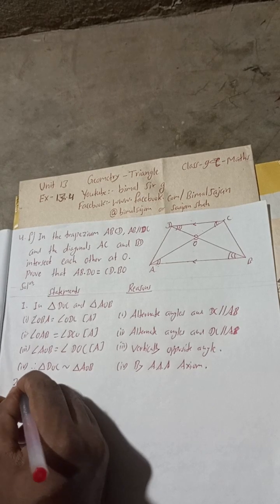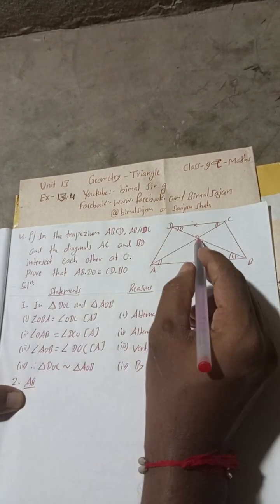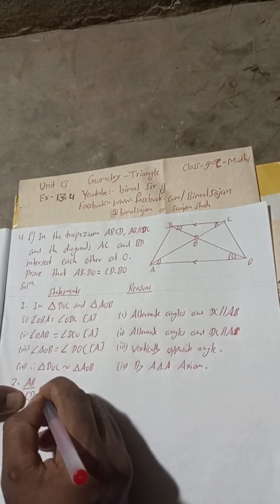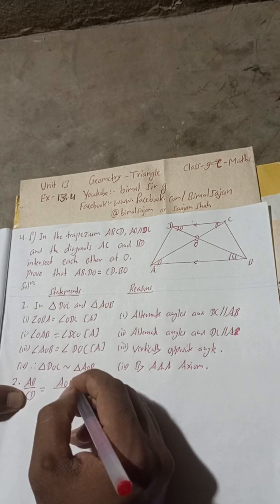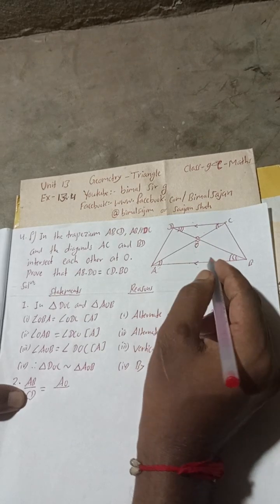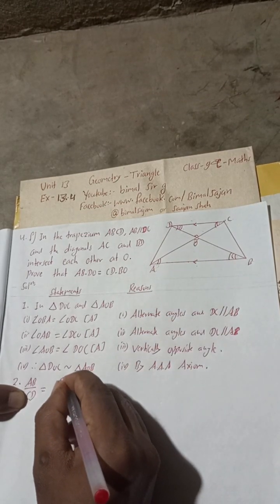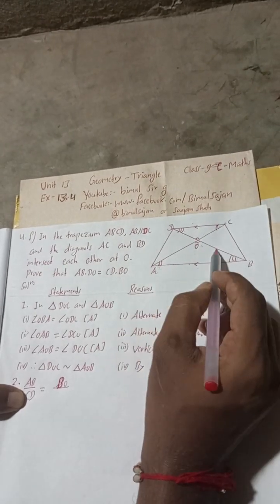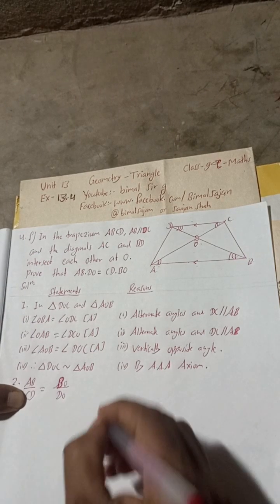Now number four, therefore, triangle DOC is similar to triangle AOB. What is the reason here? AAA or angle angle angle. Now statement 2. AB by CD is equal to BO by DO. Now we have taken BO because we have to prove BO.